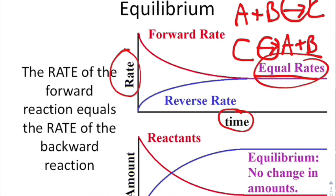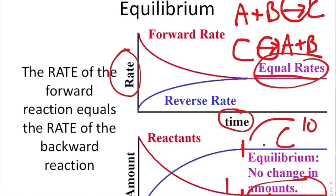Equilibrium also means that there is no changing amount of the substance. The amount of C is equal to the amount of A and B that I have. Notice the values don't have to be the same — I can have 1A and 1B and 10C — but there is no more change in the amount of any substance.